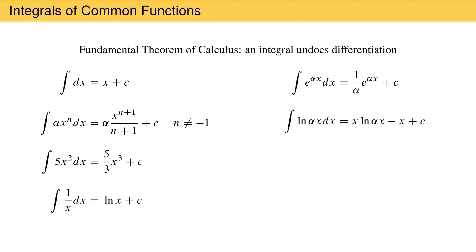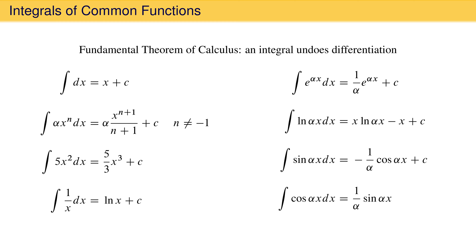This looks complicated, but you can confirm that the derivative of this result gives the integrand. The integral of sine of a constant times x is negative 1 over the constant times cosine of the constant times x plus the constant of integration. The integral of cosine of a constant times x is 1 over the constant times sine of the constant times x plus the constant of integration.